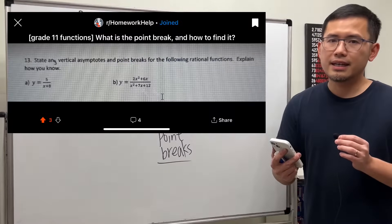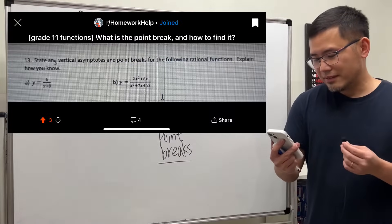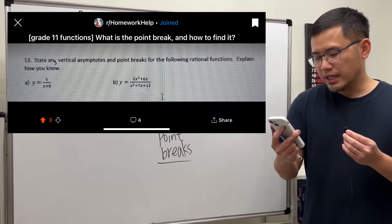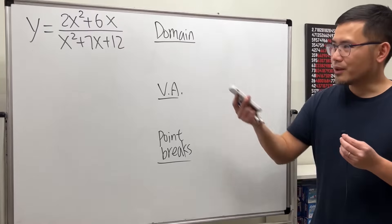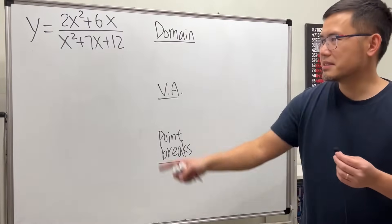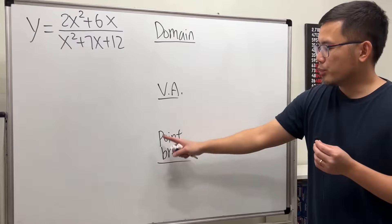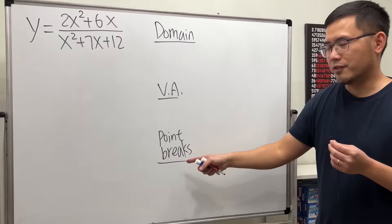What is the point break and how to find it? Here we have these two rational functions and we are going to find any vertical asymptotes and point breaks for them. So let me work out part B for you because this right here is the harder one. And since you asked what the point breaks are, let me explain this one first.